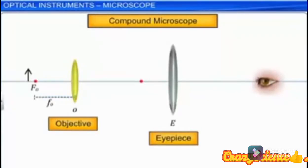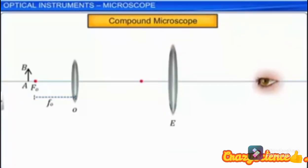Let a small object AB be placed at a distance just greater than the focal length of the objective f_o. When light rays from the object are incident on the objective, the objective forms an image A'B' which is real, inverted, and magnified.